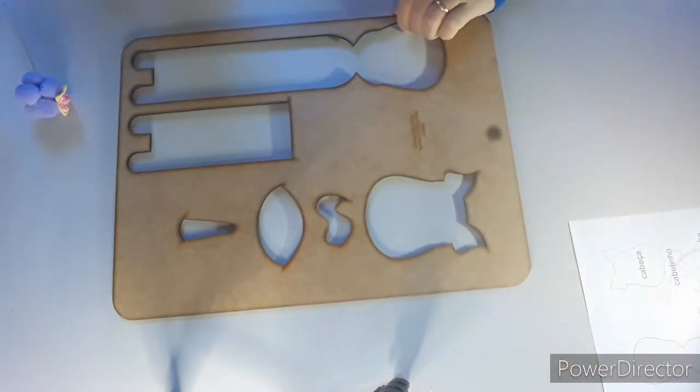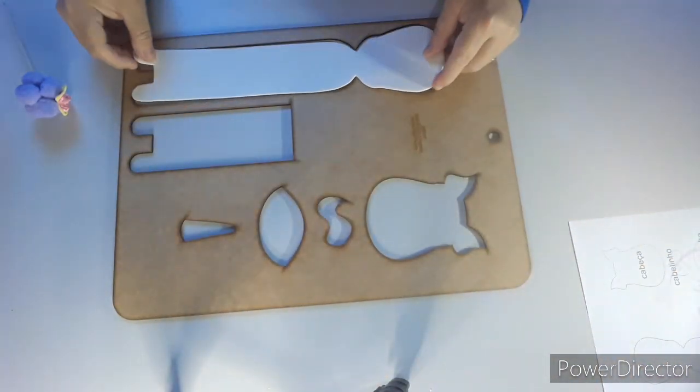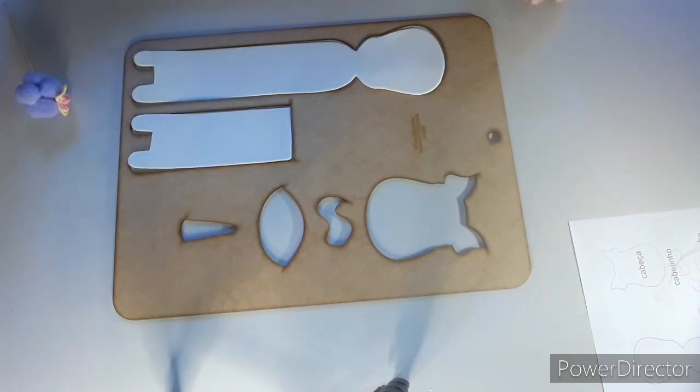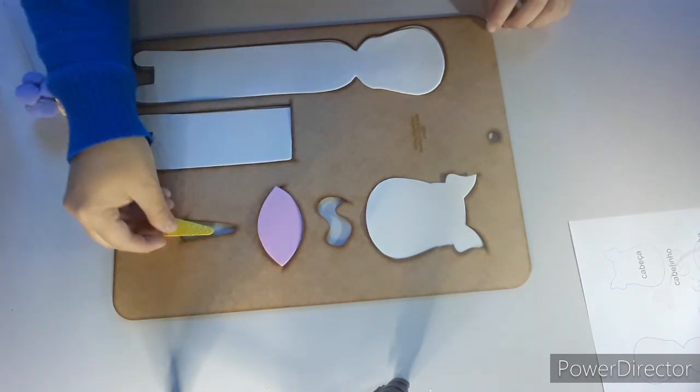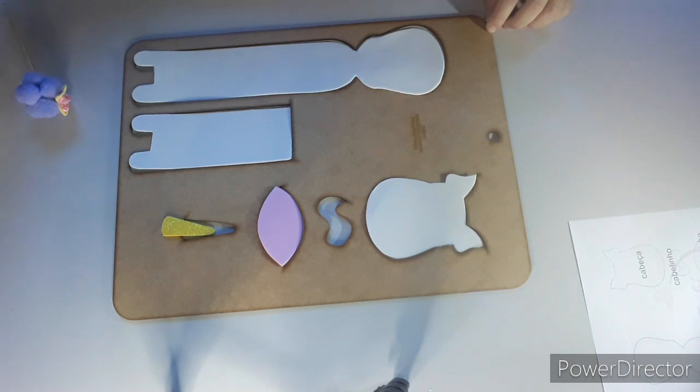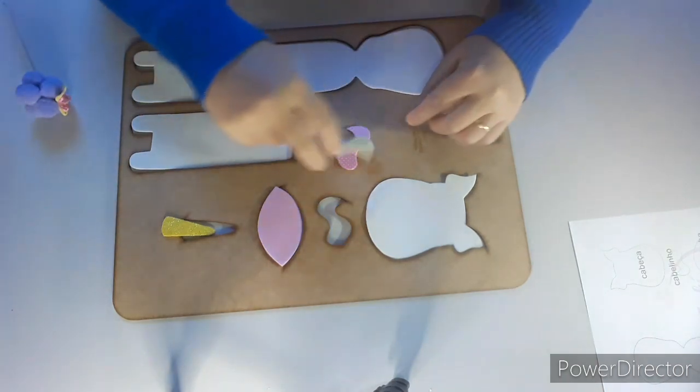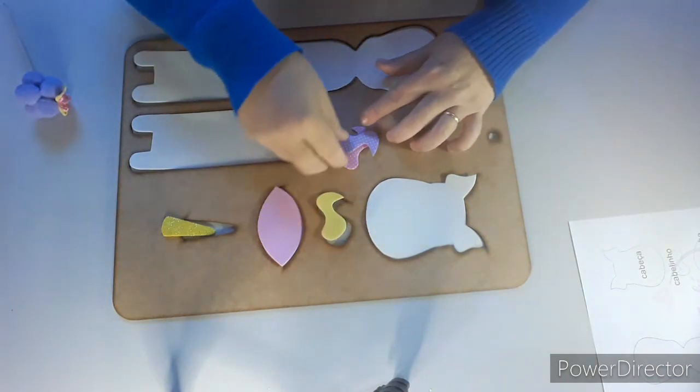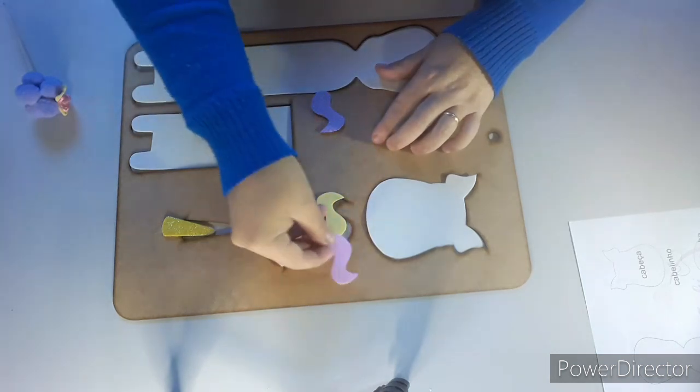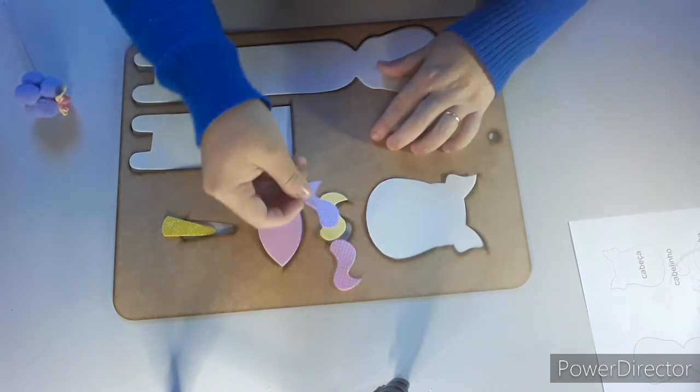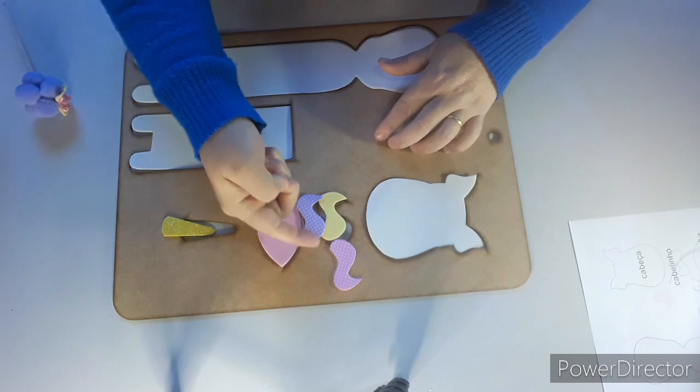Para fazer esse estojo, nós vamos precisar de uma dessa, uma dessa aqui, uma do rostinho, uma da bochechinha, um chifrinho. E nós vamos utilizar três cabelinhos, sendo dois na mesma posição e um em posição contrária.